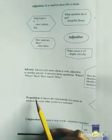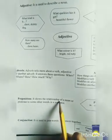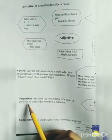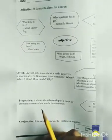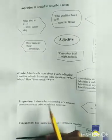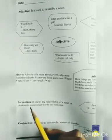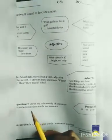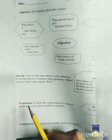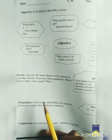Next one is preposition. It shows the relationship of a noun or pronoun to some other words in a sentence. Preposition show karta hai relationship noun ka ya pronoun ka kisi aur word se in a sentence. In other words, preposition tells the position of anything or someone that where it is.